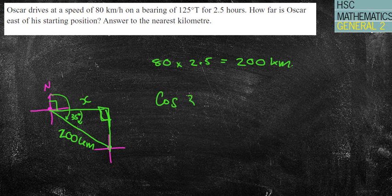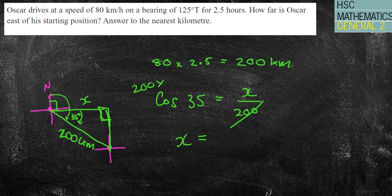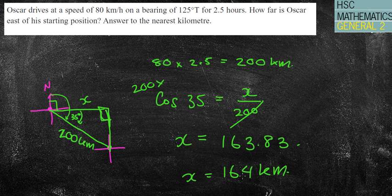So now I can put my rule into action for adjacent and hypotenuse. So that's cos. Cos 35 equals my adjacent over my hypotenuse. I'm going to take the 200 on the other side and do 200 times cos 35. So 200 times cos 35, I get X equals 163.83. X equals 164 kilometers. And that probably makes a bit of sense. It needs to be less than the 200 there, but it's still quite big.